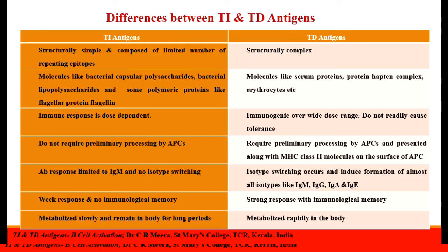To summarize: T-independent antigens are structurally simple and composed of a limited number of repeating epitopes. They include molecules like bacterial capsular polysaccharides, bacterial lipopolysaccharides, and some polymeric proteins like flagellar protein flagellin. Immune response by T-independent antigens is dose-dependent — too little antigen is non-immunogenic and too much can cause immunological tolerance. They do not require preliminary processing by antigen-presenting cells. The antibody response is limited to IgM with no isotype switching. Immune response is weak with no immunological memory, and these antigens are metabolized slowly, remaining in the body for long periods.